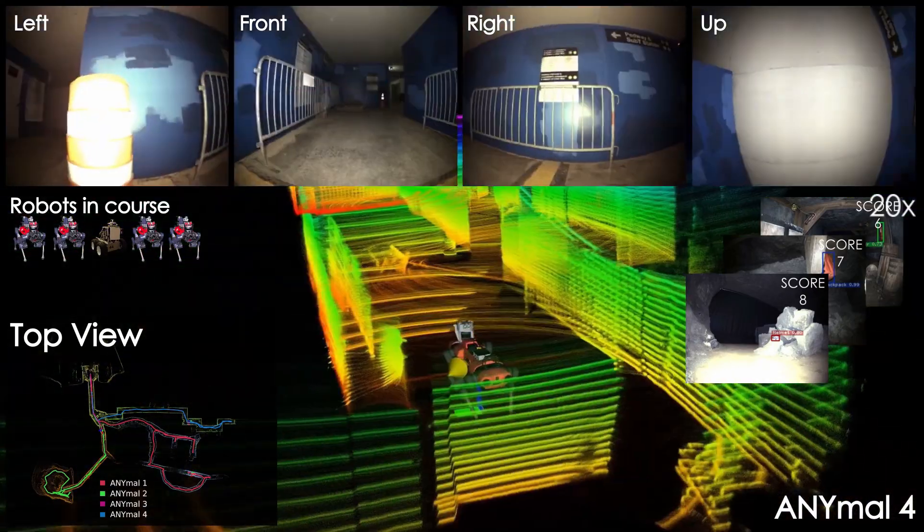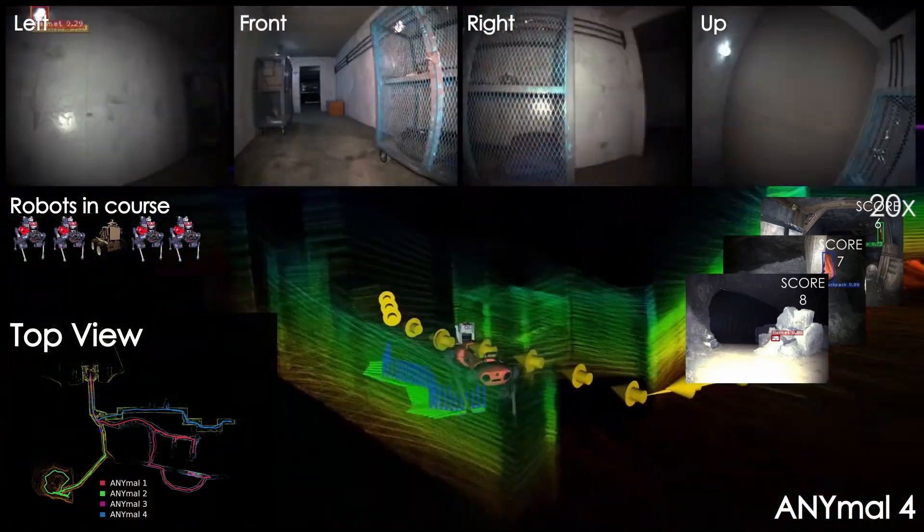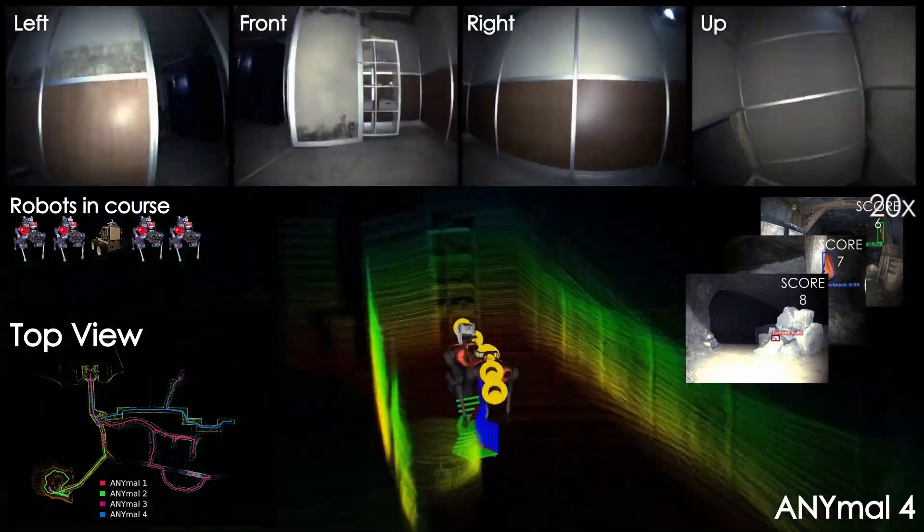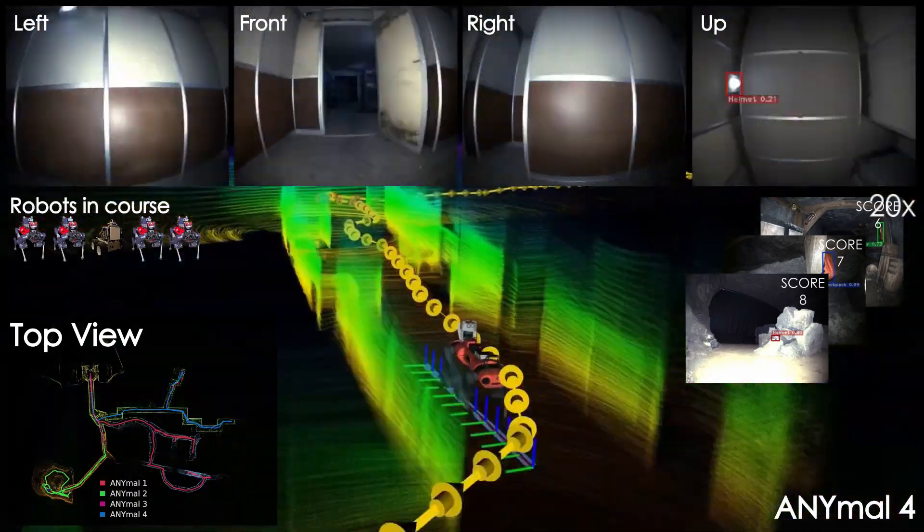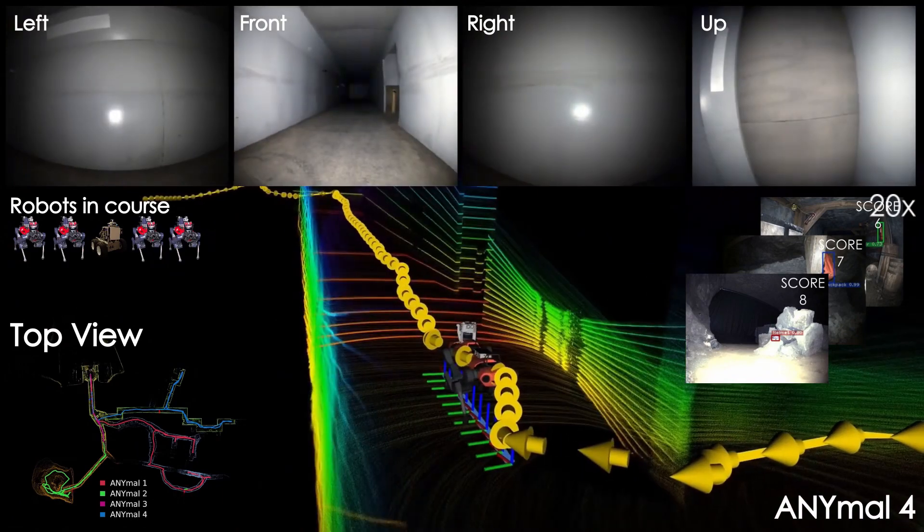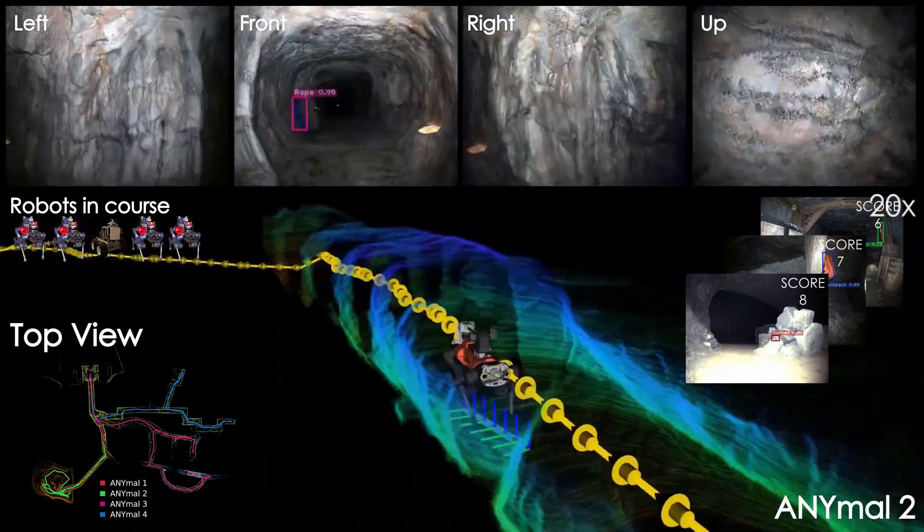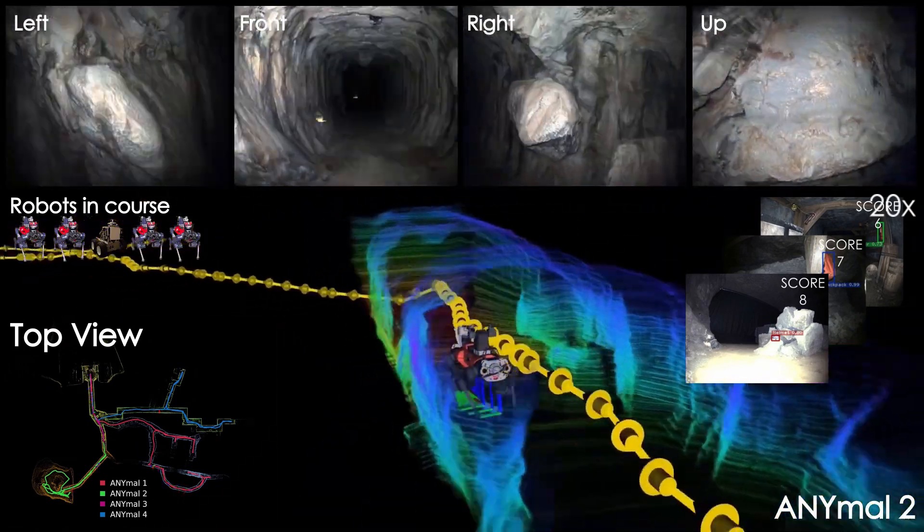In this video, we present instances from the onboard data of our main ground platforms, the ANYmal C robots, autonomously exploring the different sections of the course of the Subterranean Challenge while detecting and scoring 23 different artifacts within the 60 minutes mission time.